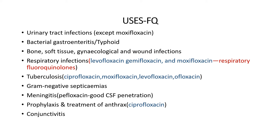Fluoroquinolones like ciprofloxacin, moxifloxacin, levofloxacin, and ofloxacin are used as second line agents in tuberculosis, especially in the treatment of resistant tuberculosis. They are also used in gram negative septicemia and meningitis, especially pefloxacin which has good CSF penetration. Ciprofloxacin has been approved for prophylaxis and treatment of anthrax, and fluoroquinolones are also used in the management of conjunctivitis.